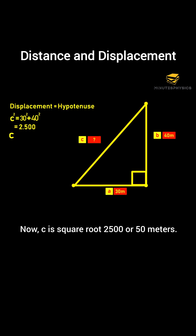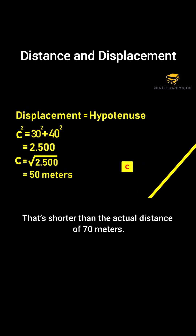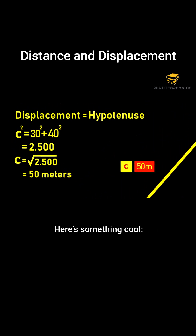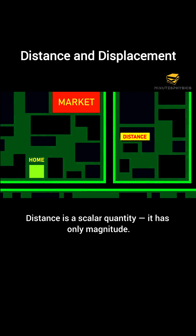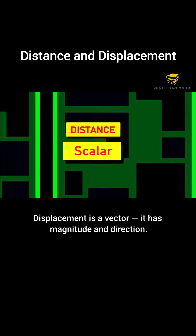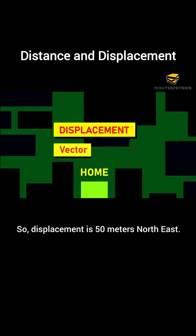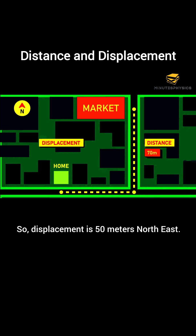c is the square root of 2,500, or 50 meters. So, displacement is 50 meters — shorter than the actual distance of 70 meters. Distance is a scalar quantity; it has only magnitude. Displacement is a vector; it has magnitude and direction. So, displacement is 50 meters northeast.